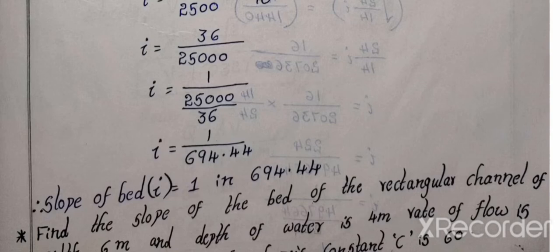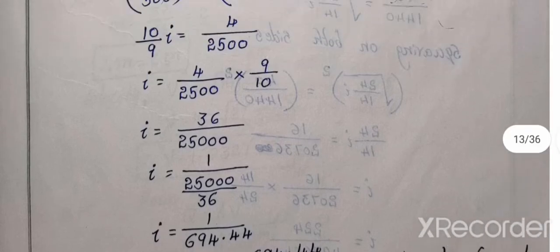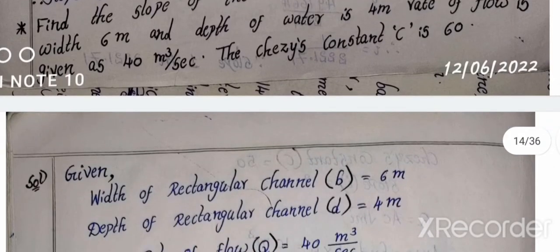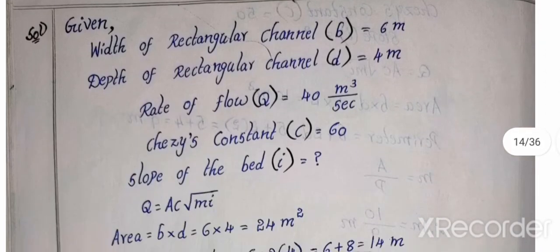Next, find the slope of the bed of the rectangular channel of width 6 meters and depth of water 4 meters, rate of flow is 40 meter cube per second. Chezy's constant is 50. So same problem, slope of the bed calculation, same type of model.